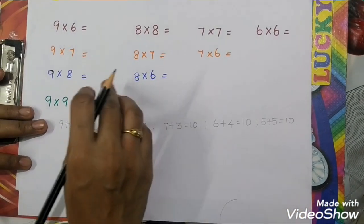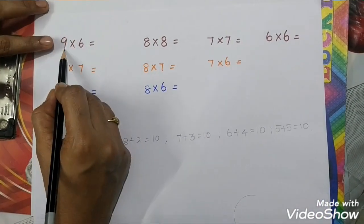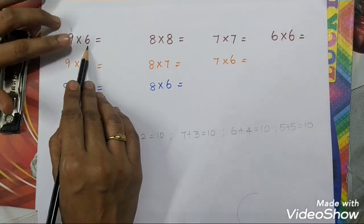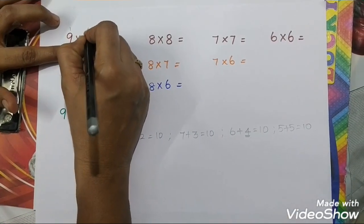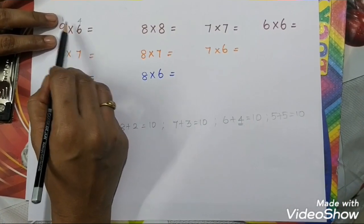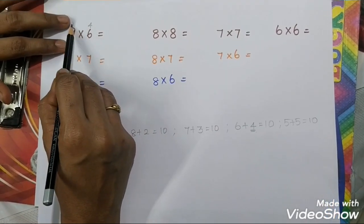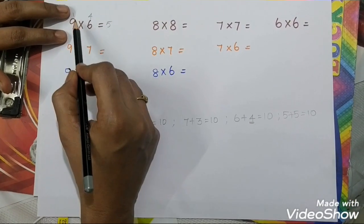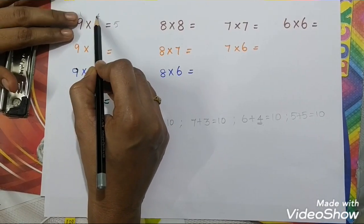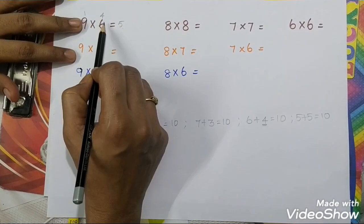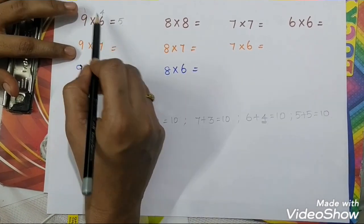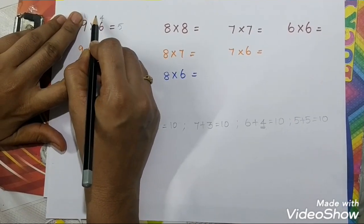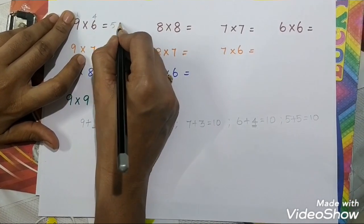Applying this to the table: 9's friend is 1, and 6's friend is 4. Use cross subtraction — 6 subtract 1 equals 5. Or 9 subtract 4 equals 5. Then multiply the friends: 1 times 4 equals 4. So 9 times 6 equals 54.